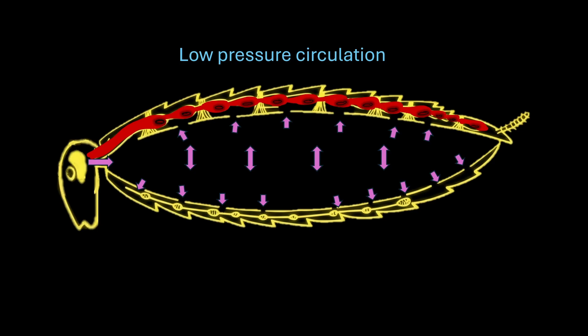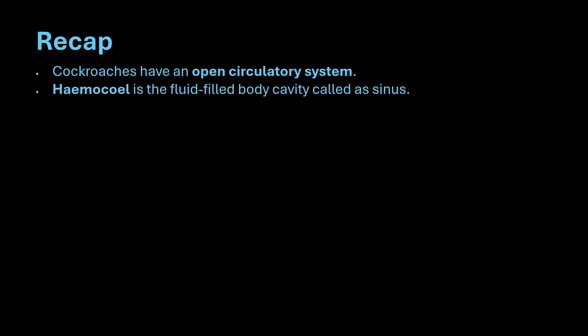So let's quickly recap what we learned. Cockroaches have an open circulatory system. Hemocele is the fluid-filled body cavity called as sinus. Hemocele is divided into three sinuses: pericardial, perivisceral, and perineural.